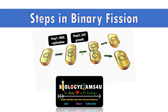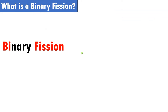Hi friends, welcome to biology exams4u.com. Today we have a very short video on what are the steps in binary fission within five minutes. Binary fission: 'bi' means two, 'fission' means division. Binary fission means the formation or division of a single cell into two.